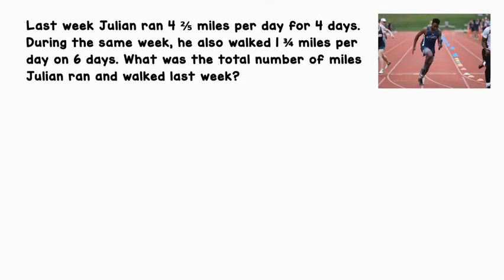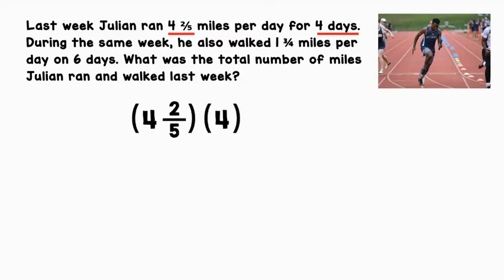Last week, Julian ran 4 and 2 fifths miles per day for 4 days. During the same week, he also walked 1 and 3 fourths miles per day on 6 days. What was the total number of miles Julian ran and walked last week? Let's pull out key information from this word problem. Julian ran 4 and 2 fifths miles per day, meaning this happened for 4 days, so let's multiply 4 and 2 fifths by 4. We are using parentheses here to indicate multiplication.